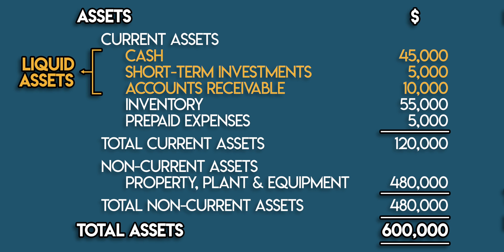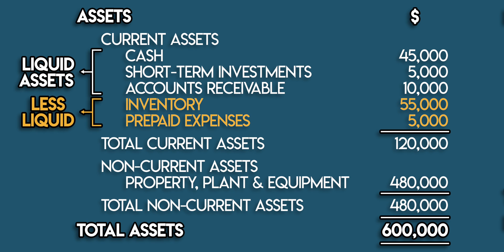We'll call short-term investments and accounts receivable liquid assets because they can be converted into cash quickly. Short-term investments, or marketable securities, can be bought and sold easily on a stock exchange, and accounts receivable can usually be converted into cash in under 90 days. At the bottom we have inventory and prepaid expenses, which are less liquid. Inventory carries a risk it can't be sold or needs to be heavily discounted, and prepaid expenses cannot be sold for cash.